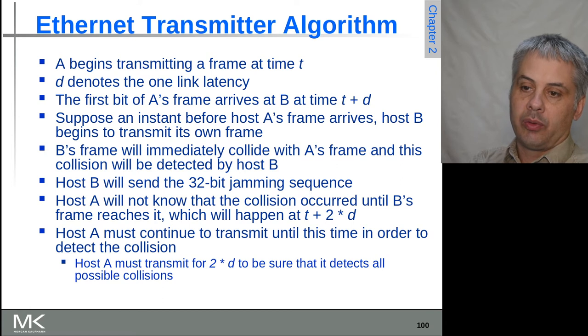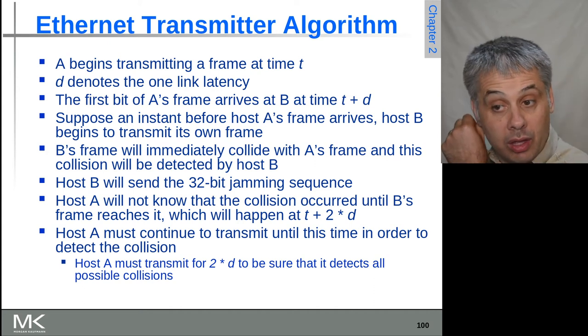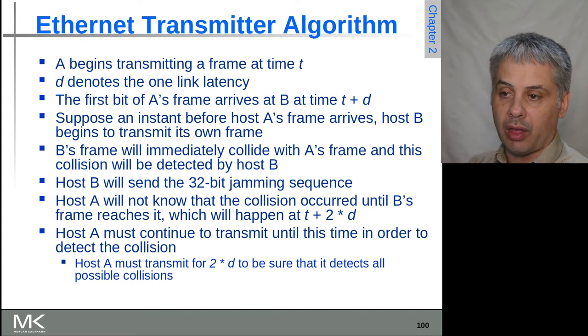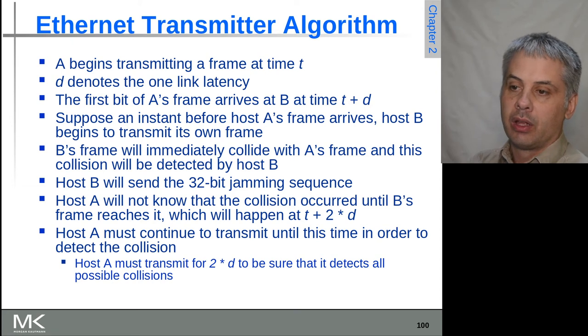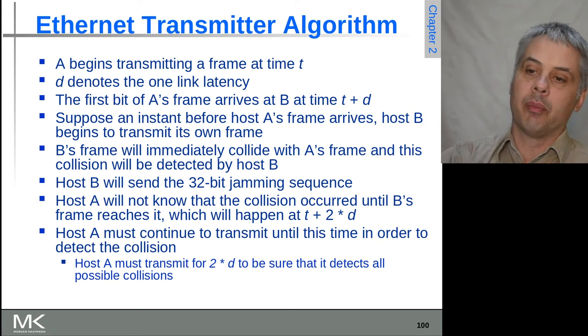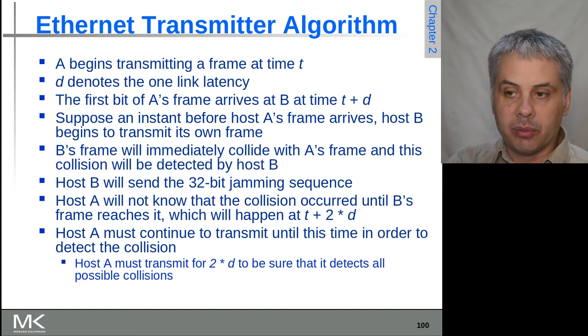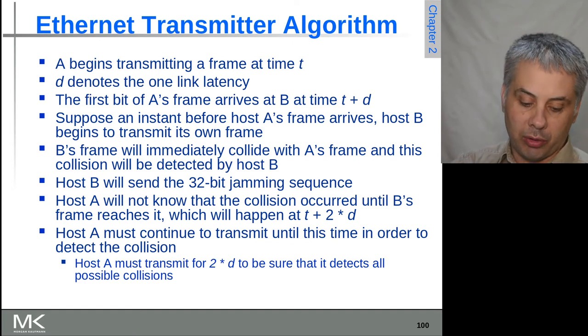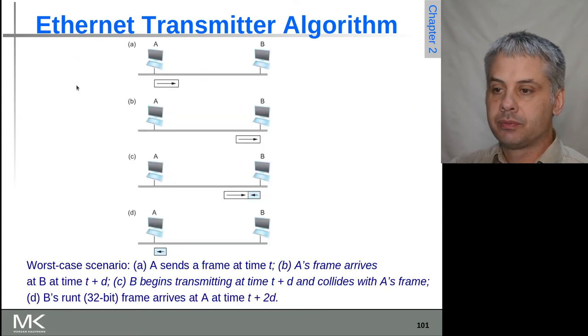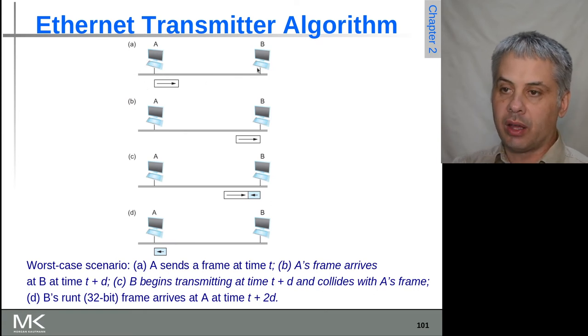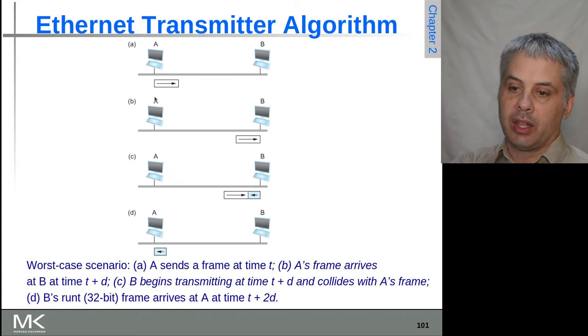A has to keep transmitting, and B is going to be sending the 32-bit jamming sequence, and so A effectively has to do the same as well, sending the jamming sequence from its side once it realizes that this is going on. That jamming sequence will continue from A after B's jamming sequence has concluded, because B realized first that the collision has occurred.